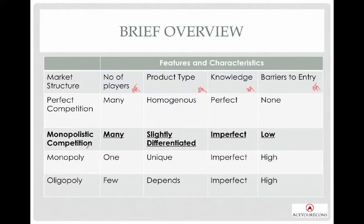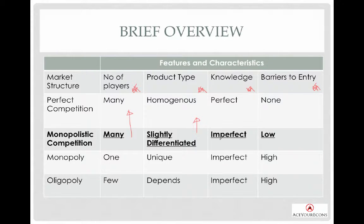For the monopolistic competition (MC) firm, comparing between PC and Monopoly: number one, monopolistic competition tends to favor PC more in terms of number of players. In terms of product type, it is slightly differentiated, so it leans towards PC. The level of knowledge is imperfect, leaning towards Monopoly. And barriers to entry lean towards PC. So out of the four features, only knowledge tilts towards Monopoly; the rest incline towards the PC firm.